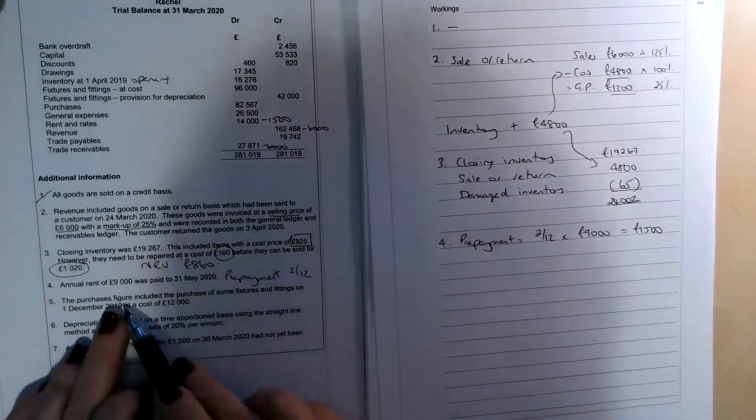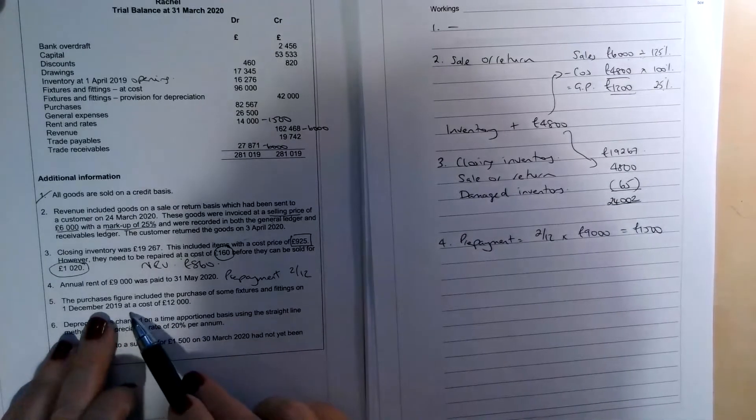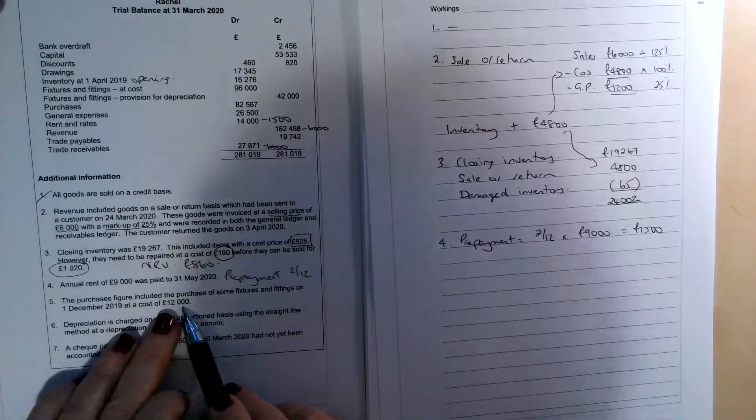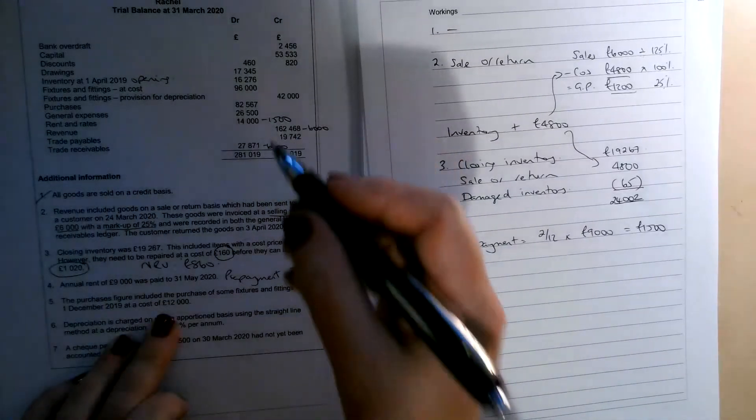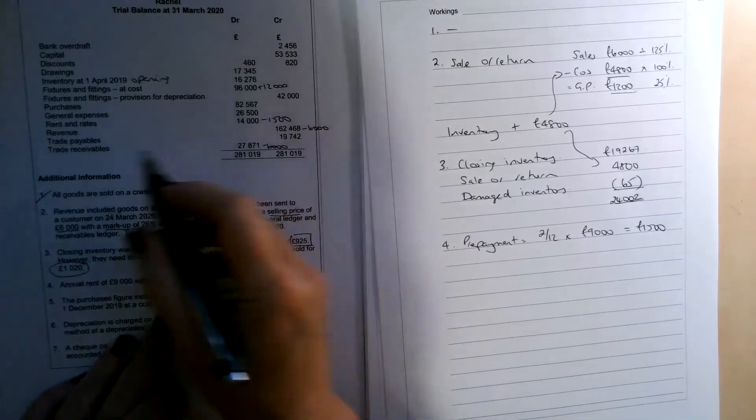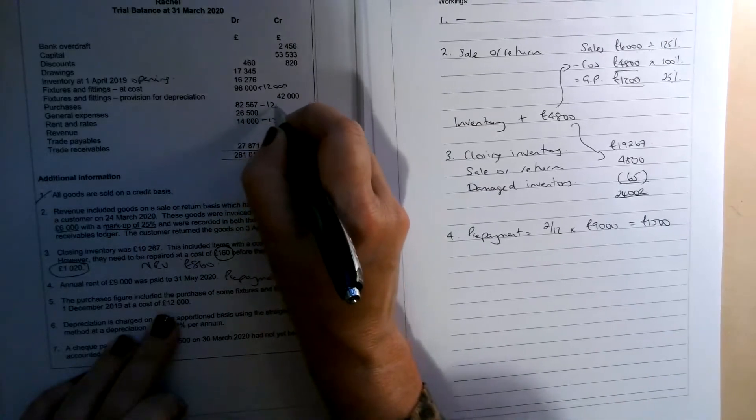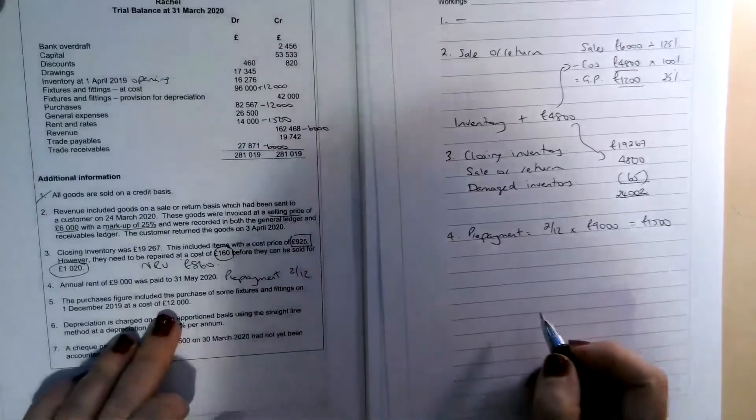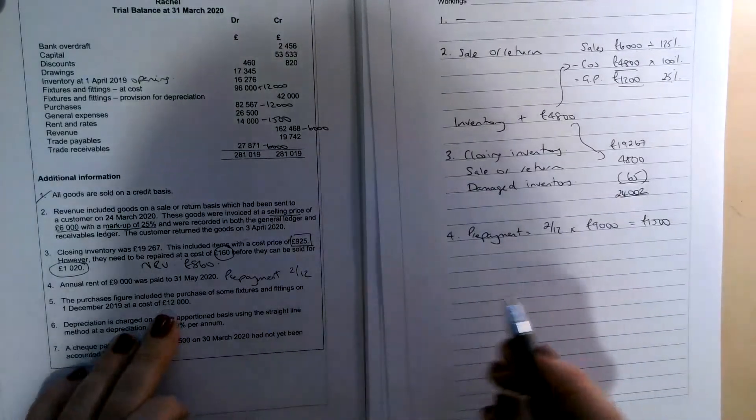Number five then. It says that the purchases figure included the purchase of some fixtures and fittings on the 1st of December 2019 at a cost of £12,000. We need to take the £12,000, we need to add it onto the fixtures and fittings at cost. But we must remember to take it out of our purchases figure there. So that £82567 is going to be reduced by £12,000.